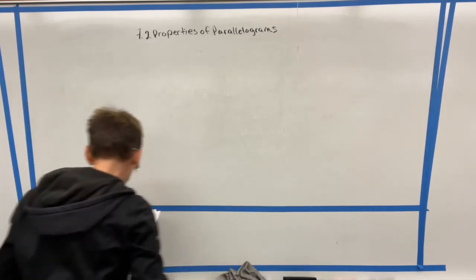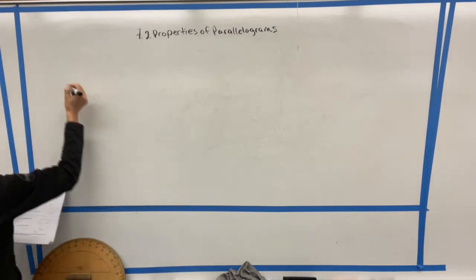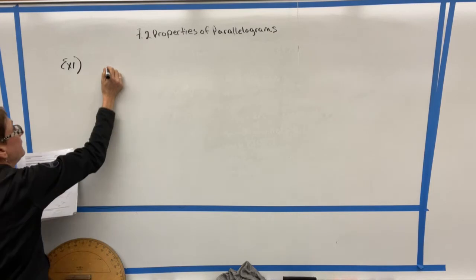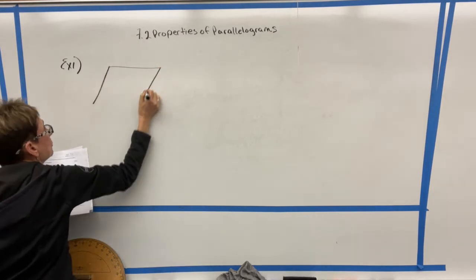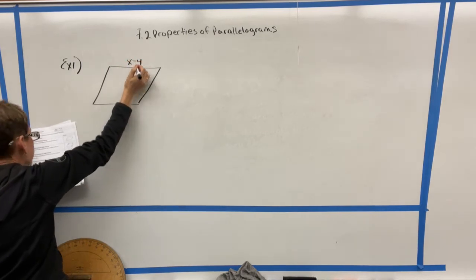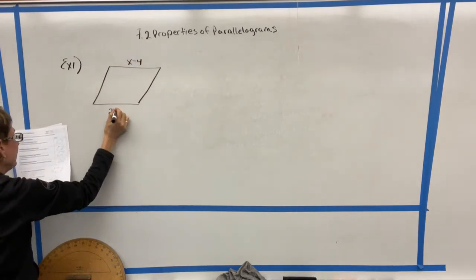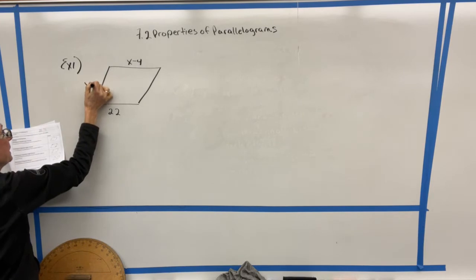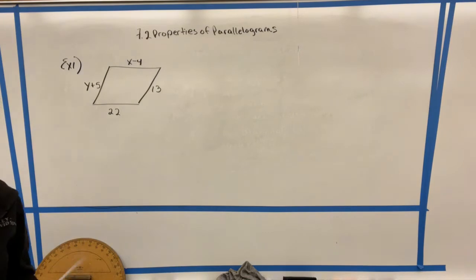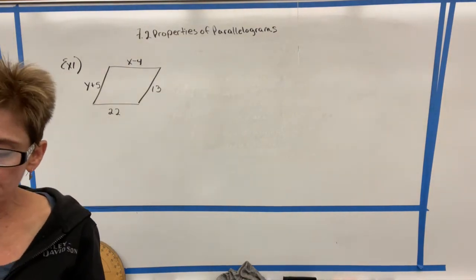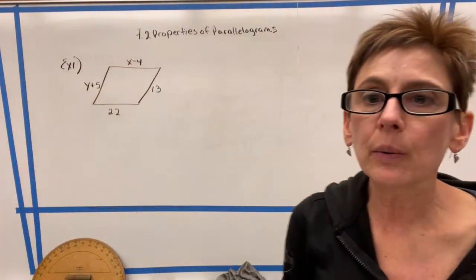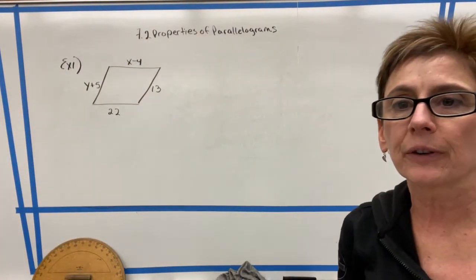Let's go ahead and look at example one. So example one is to find the value of X and Y. So we're going to draw a parallelogram. And this would be assuming that we were given that the figure is a parallelogram. So assuming that this figure is a parallelogram, how would we solve for X and Y? Think, if you can, about what equations you might set up to solve for X and Y.